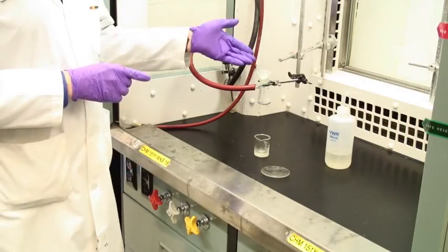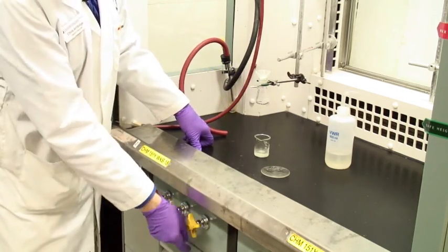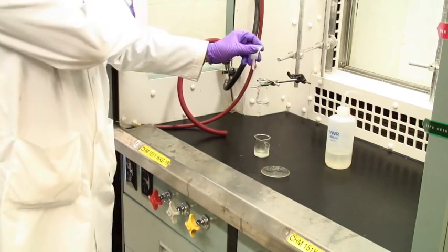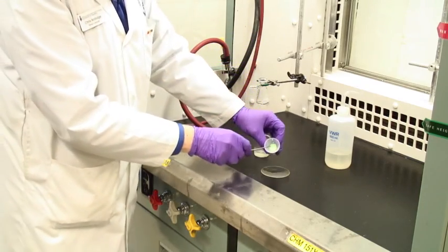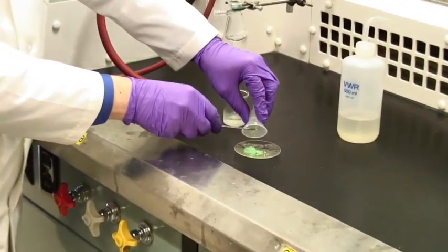Once you're done, it's pumped dry, then disconnect the vacuum, turn the vacuum off here, and remove the Hirsch funnel. Take your spatula and transfer the solid onto a watch glass.